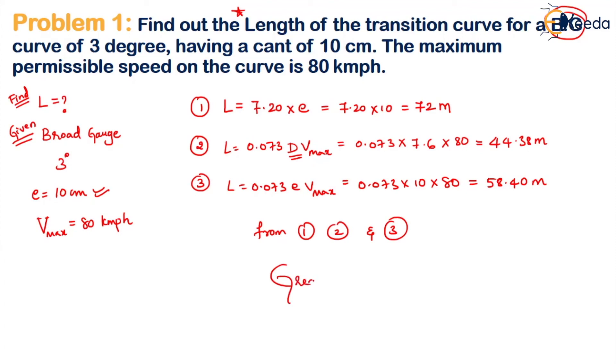From formulas 1, 2, and 3, the greatest of the three values will be the length of the transition curve. We have 72, 44.38, and 58.40 meters, so we choose 72 meters as the final answer.